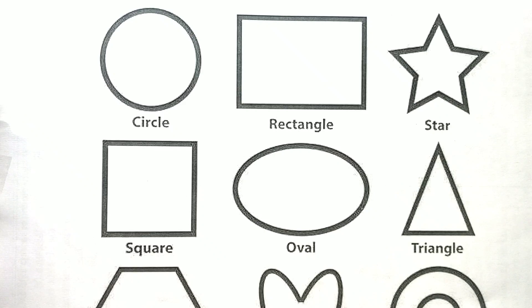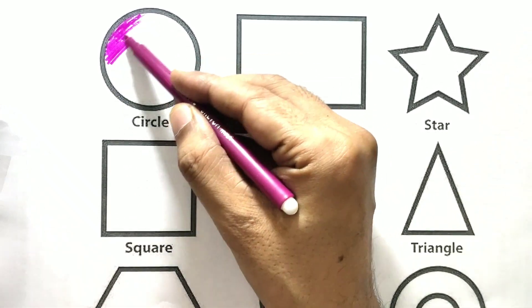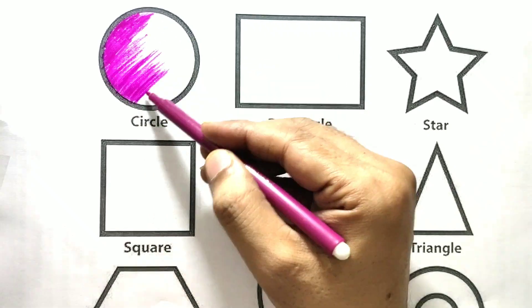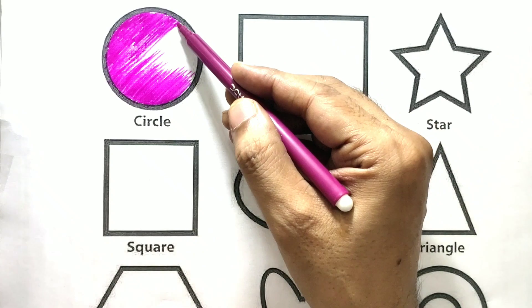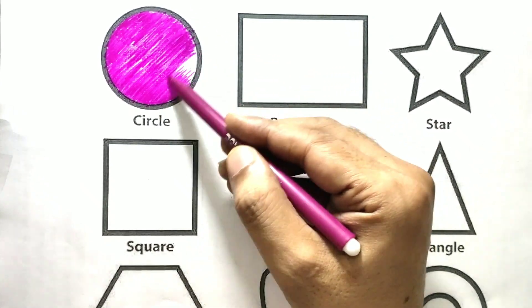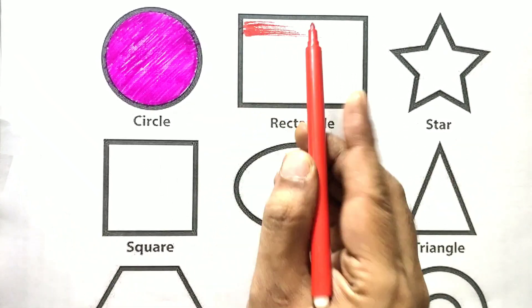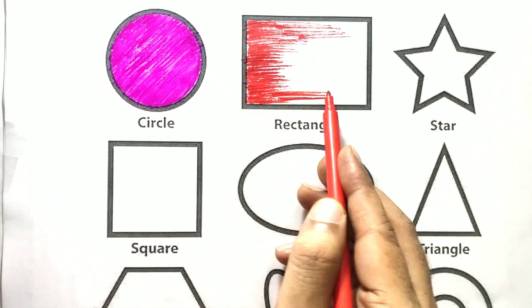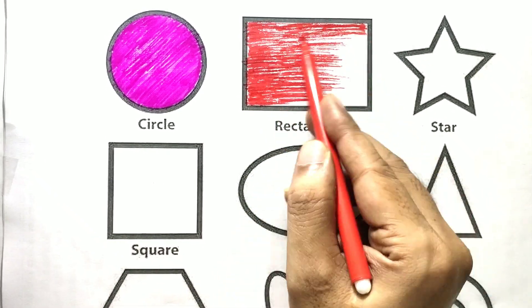Hello kids, today we will learn about multiple shapes with colors. We are doing pink color in a circle. Rectangle with red color.